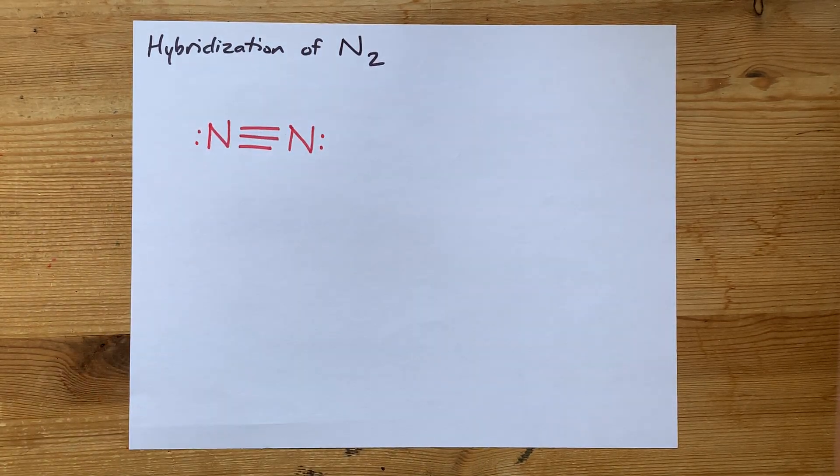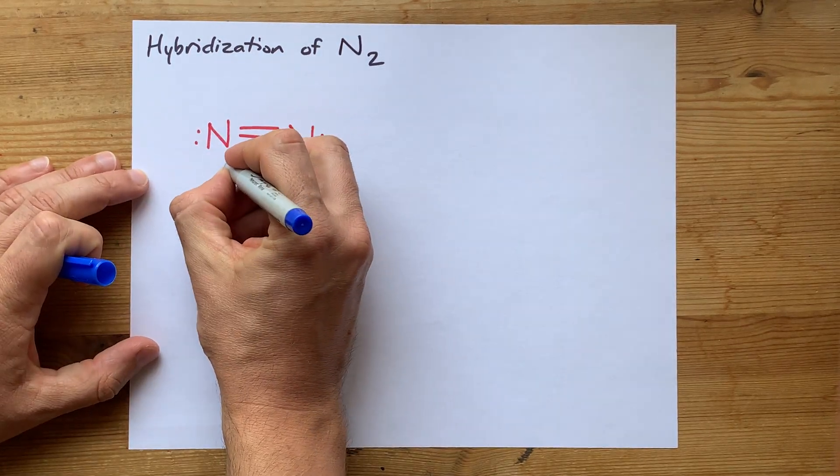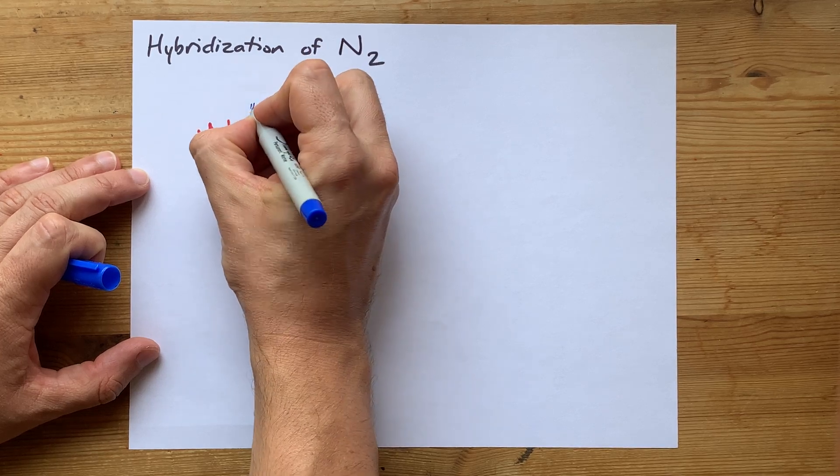Well, this is the Lewis structure, and I'm going to point out that you have a sigma bond, that's the first bond between any two atoms, and two pi bonds here.